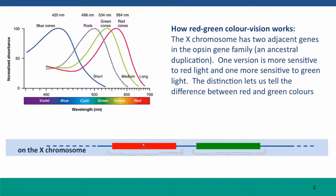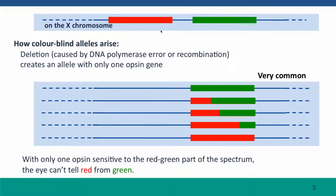One is more sensitive to longer wavelengths — that's the red one. One is more sensitive to shorter wavelengths — that's the green one. These have different specificities, but the DNA sequences are still quite similar; they are obviously homologous genes. This sequence similarity increases the frequency of particular kinds of mutations — mutations that recombine the red and green genes during meiotic crossing over, or errors that DNA polymerase makes — such that mutant alleles arise that have only a single opsin gene instead of two. This gene can be the green version, the red version, or some hybrid of the two. It doesn't make a big difference because the sensitivities of these two pigments are quite close, but what really matters is that now there's only one pigment sensitivity because there's only one opsin gene.